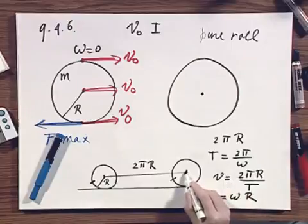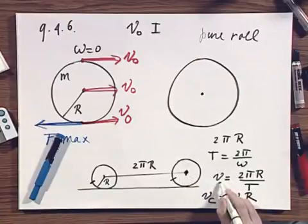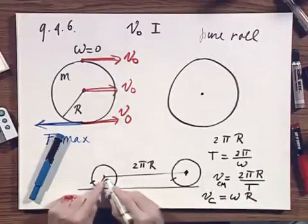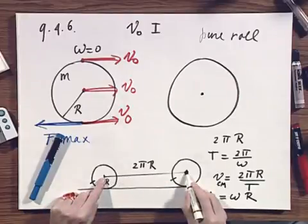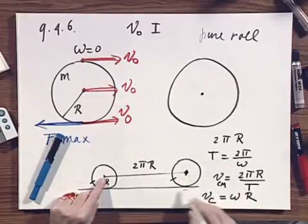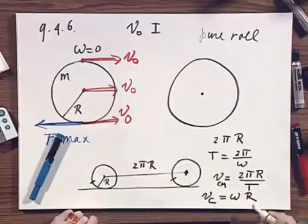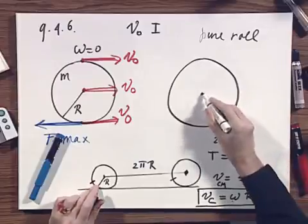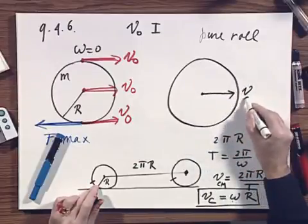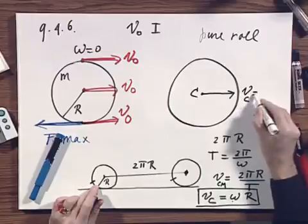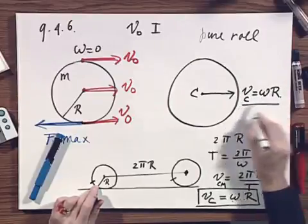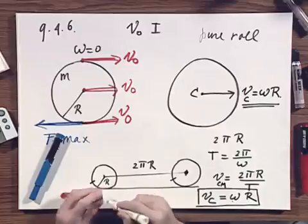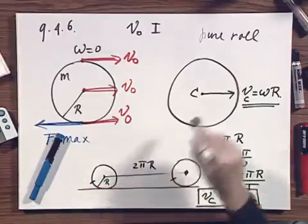So the velocity of the center of mass, this is the velocity of the center of mass, is 2πR, that's the distance that it moved, divided by the time for this object to go around. And 2π divided by T is omega. So you see here that the pure roll condition, the sufficient condition is that this V of the center of mass must be omega R. That is the pure roll condition. Then we have no longer any slip.